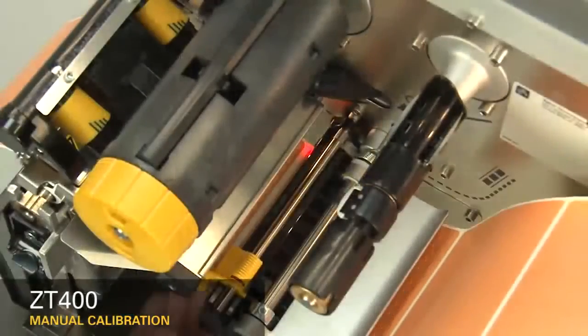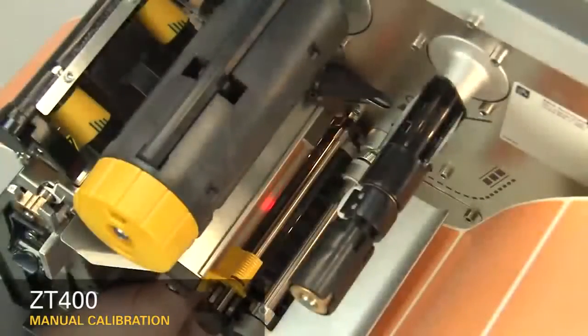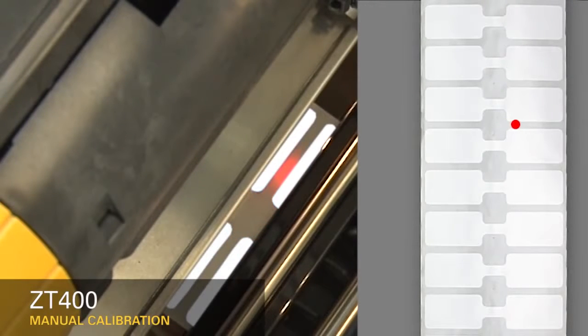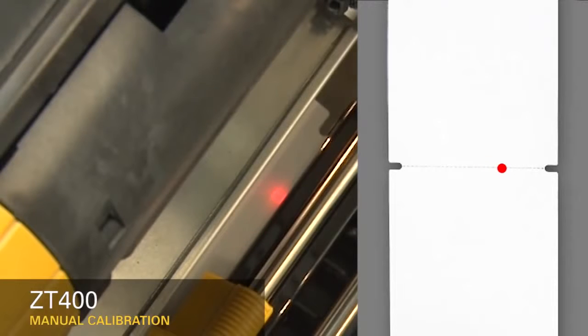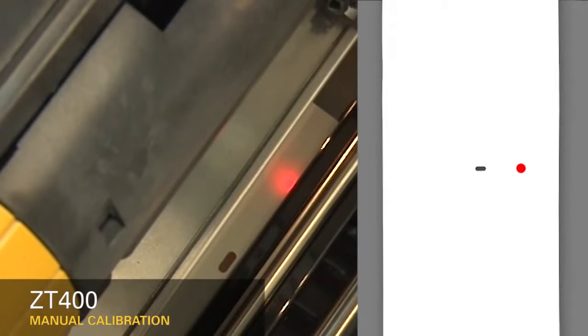If you're using media with a gap, also referred to as a web, or hole, or notch, you'll want to make sure your sensor is in the optimal position to identify that feature. Move the sensor to a location where the light passes through the notch or hole. Try to avoid locating the sensor under the hole or notch radius.